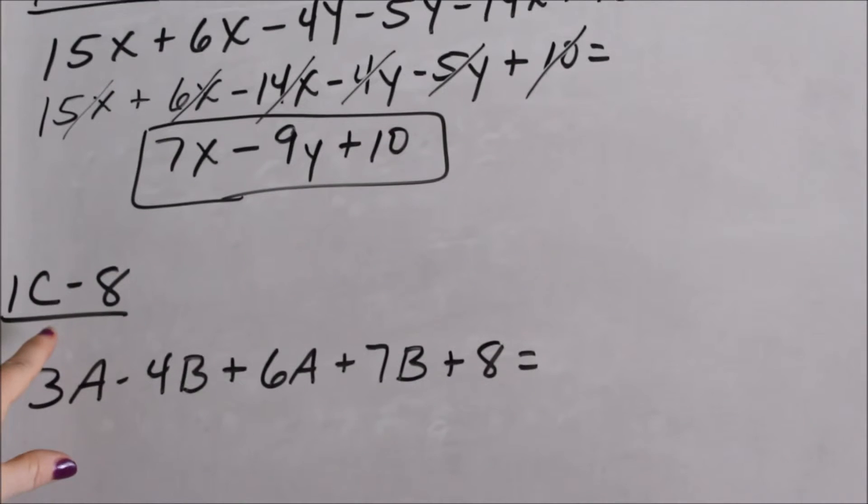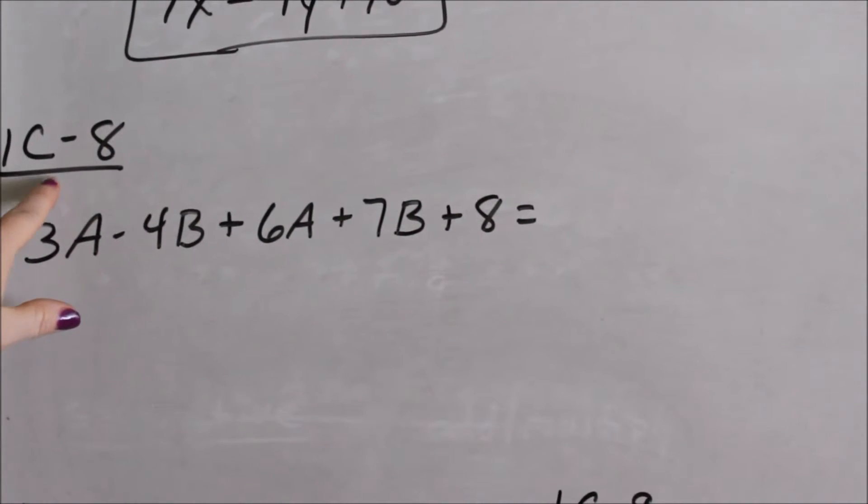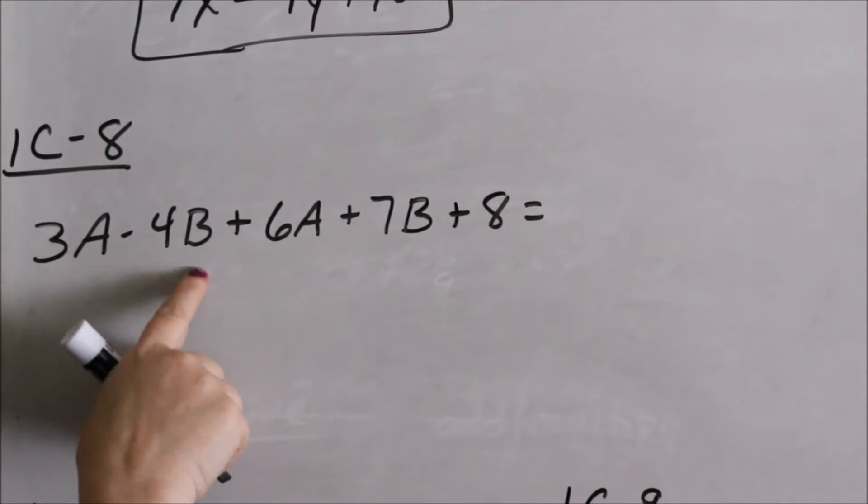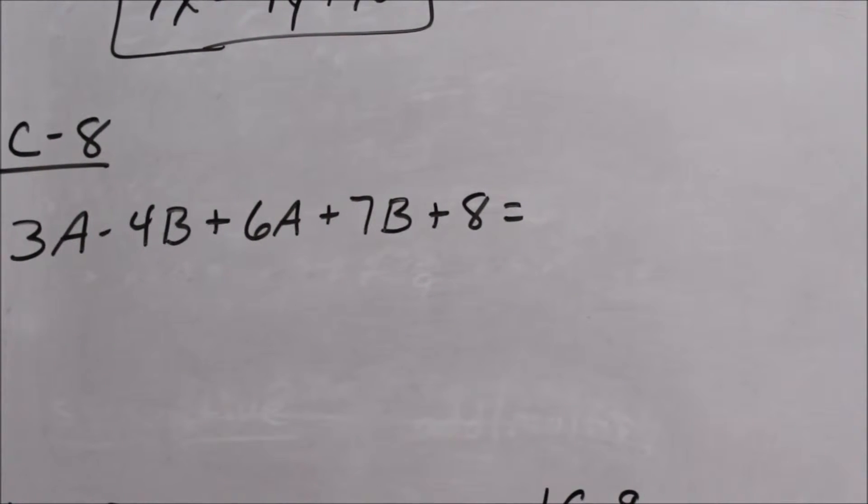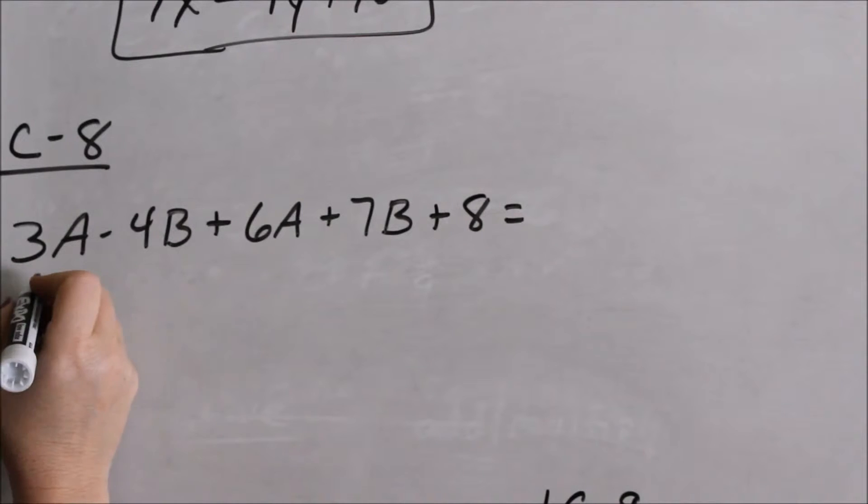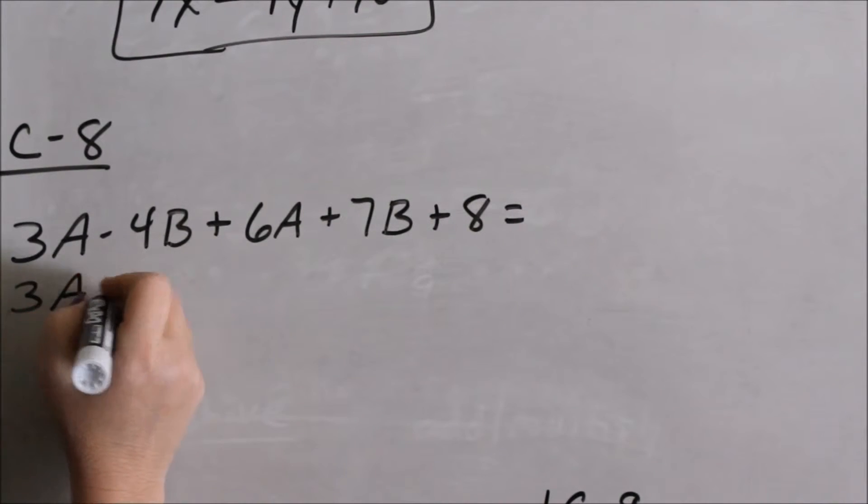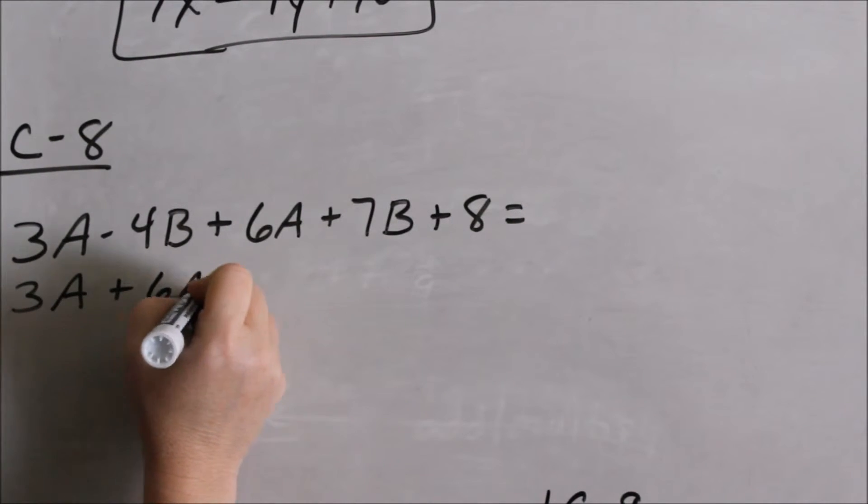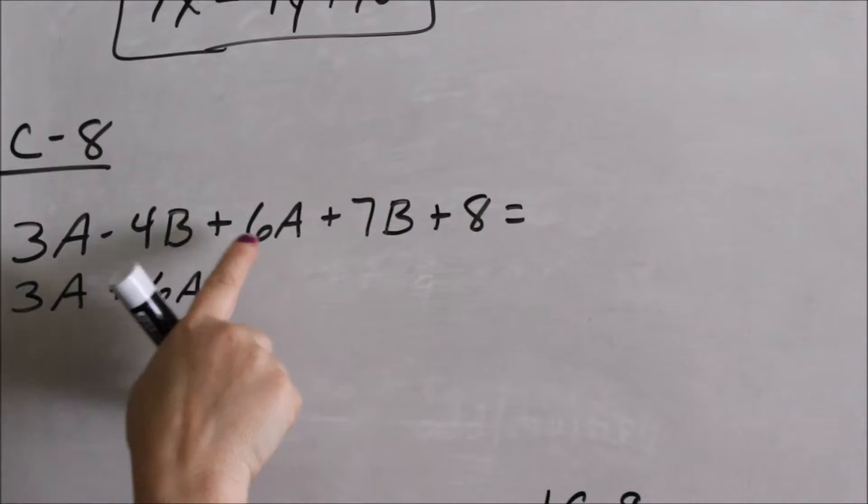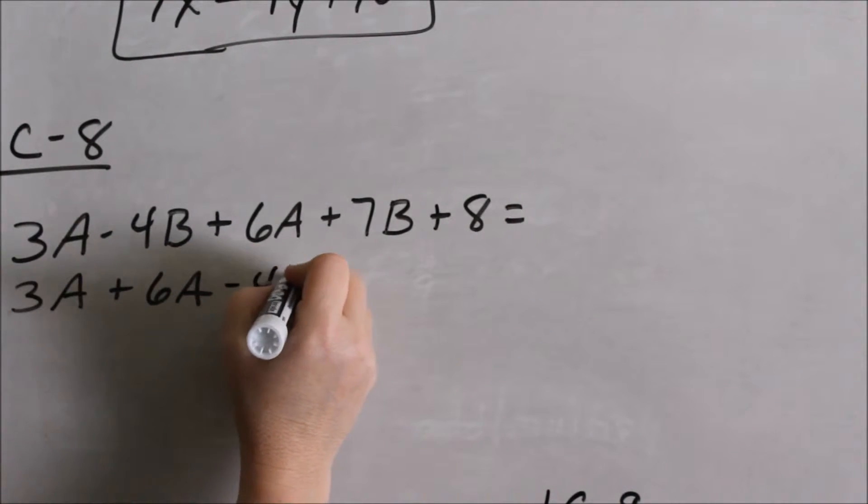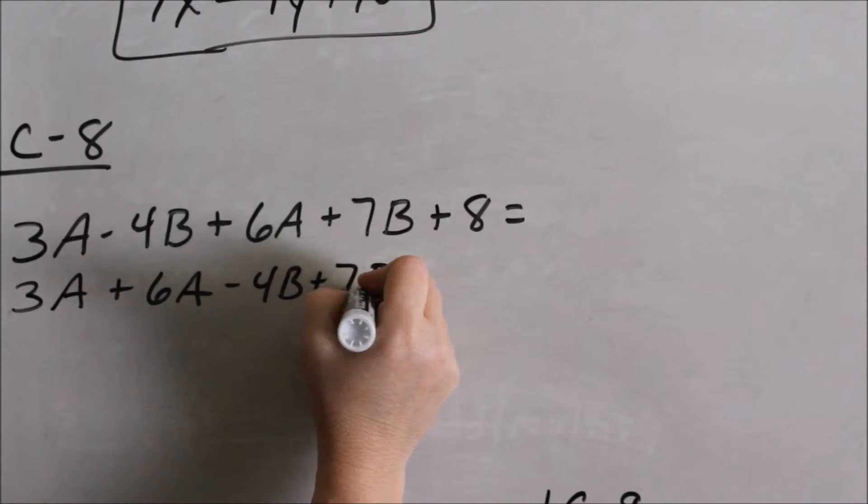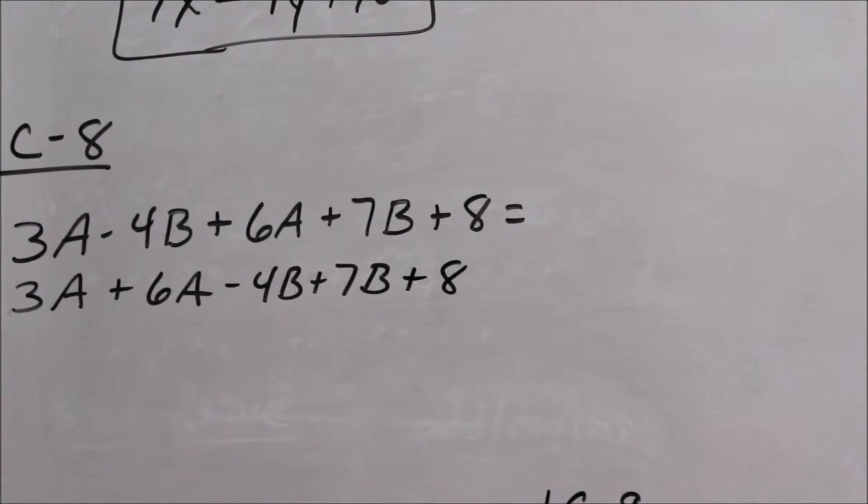Now let's look at 1C8. We're dealing with A's and B's and whole numbers. You can only combine A's to A's, B's to B's, and whole numbers to whole numbers. If you want to rewrite everything to where all of your A's are together, remember the positive goes with the A. The negative stays with the 4B. I'm going to write all my B's together, and then any whole numbers. Combining A's to A's, I have 3A plus 6A, so therefore I would have 9A's.